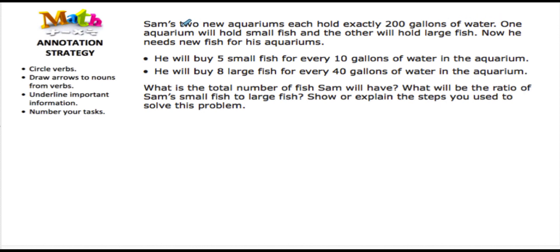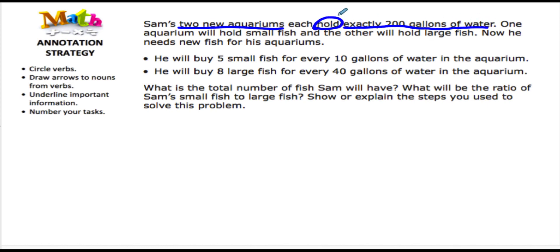'Sam's two new aquariums each hold exactly 200 gallons of water.' Stop. Let me go through and see if there's important information here. I see the name Sam — let me scan the problem briefly for other names. There are no other names besides Sam, so that's not critical. But I know he has two new aquariums — that's important. And each holds exactly 200 gallons of water — not about 200, exactly 200. There's my verb 'hold,' I circled it and drew an arrow to the aquariums that are holding that.